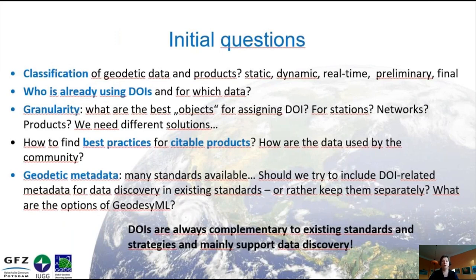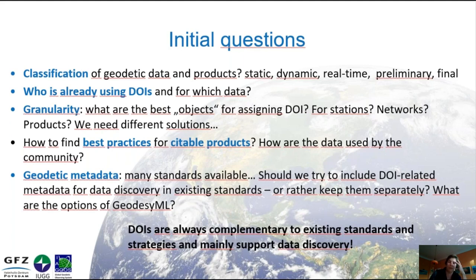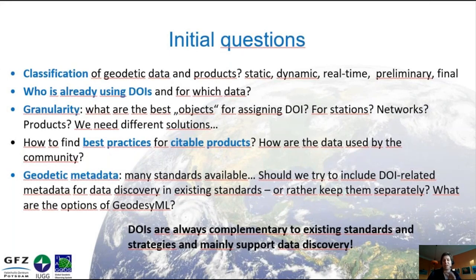Our initial questions were mainly to get an idea of what we are speaking about. We tried to classify geodetic data and products, but it is difficult. There are static data sets and dynamic ones, real-time data, preliminary products valid only for a couple of days or weeks, and final products that may appear only weeks after measurements. It is important to see who is already using DOIs and for which data, because we definitely don't want to reinvent the wheel. The largest challenge, already identified at the first step, is granularity: what are the best objects for assigning a DOI — stations, networks, or products? It became clear quickly that we need different solutions for all the different types of geodetic data.